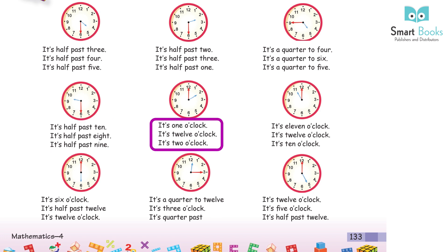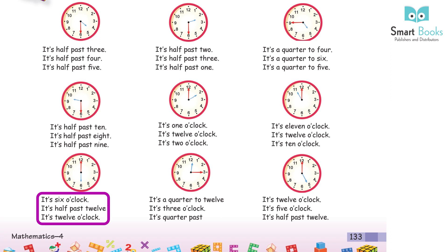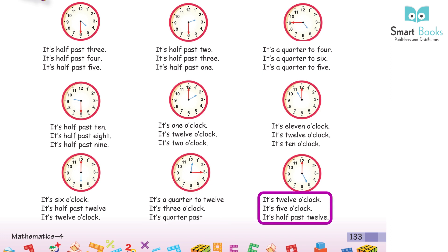It's 1 o'clock. It's 12 o'clock. It's 2 o'clock. It's 11 o'clock. It's 12 o'clock. It's 10 o'clock. It's 6 o'clock. It's half past 12. It's 12 o'clock. It's a quarter to 12. It's three o'clock. It's a quarter past. It's 12 o'clock. It's five o'clock. It's half past 12.